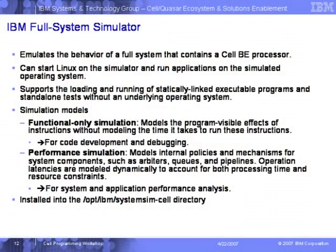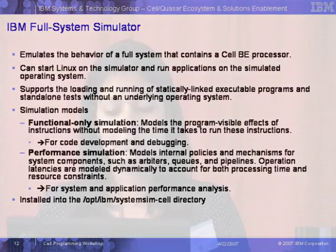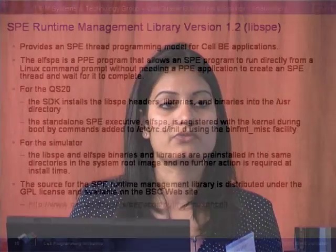There are two different kinds of simulation models. One is functional-only simulation for code development and debugging. There are also extensive tools for performance simulation — you can look at queues, pipelines, and performance statistics. After running a simple program, you can see how many cycles it took, what the CPI (cycles per instruction) count is, how many stalls there were, how many latencies there were — all in a nice graphical interface that allows you to evaluate your application and see what the performance roadblocks are.